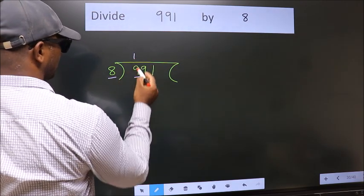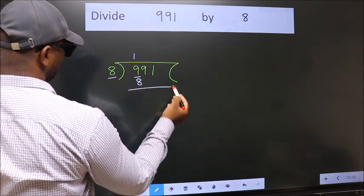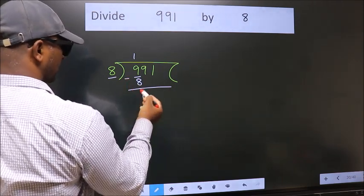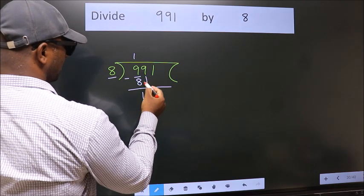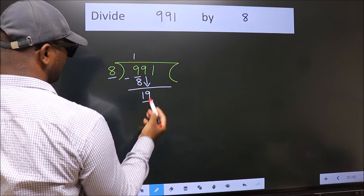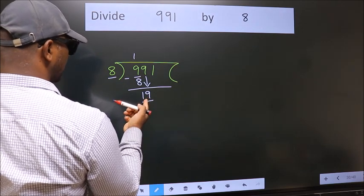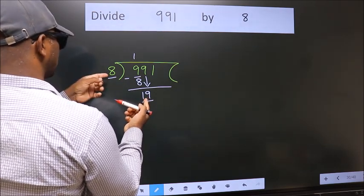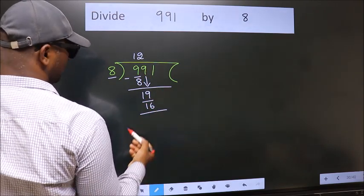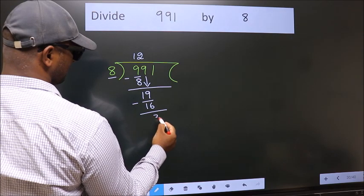...is 8 once 8. Now we should subtract, we get 1. After this, bring down the beside number, so 9 down. So 19. A number close to 19 in the 8 table is 8 twos 16. Now we subtract, we get 3.